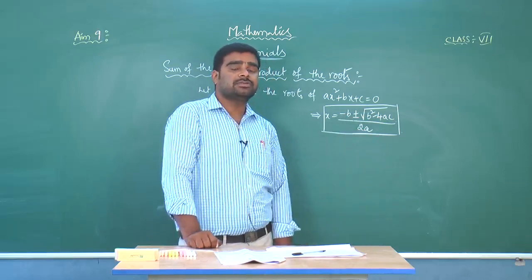So actually, C by A is the constant term divided by the coefficient of x squared. From these two results, we can conclude: when alpha and beta are the roots of the quadratic equation, then sum of the roots alpha plus beta equals minus B by A, and product of the roots alpha into beta equals C by A.